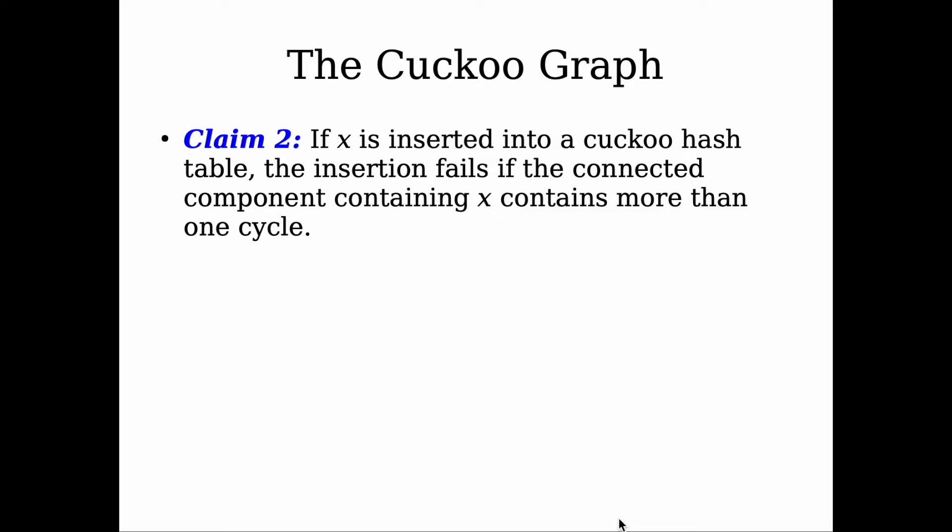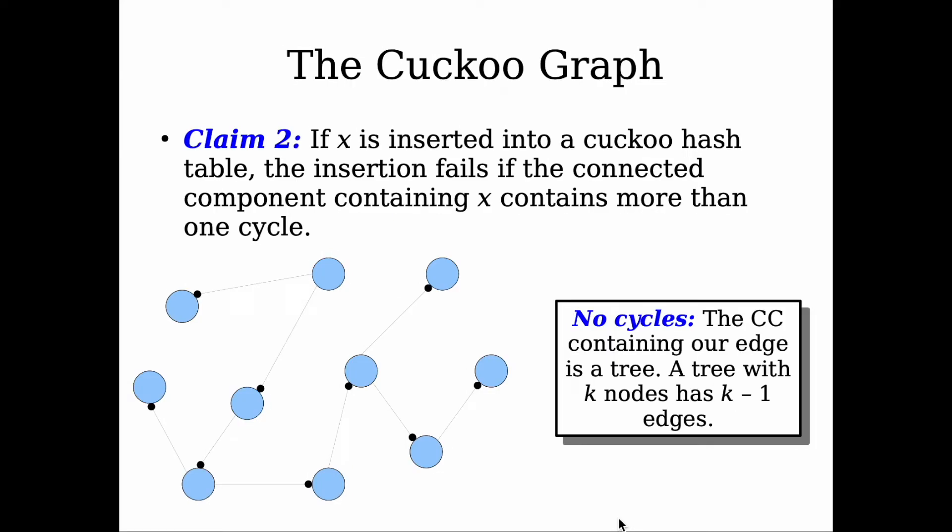The second claim is the opposite of the first claim. Here we deal with failing insertions, so insertion of x fails if the connected component contains more than one cycle. But to explain the proof idea for claim two, we need to discuss the intuition about the three possible cases when we insert an element x.